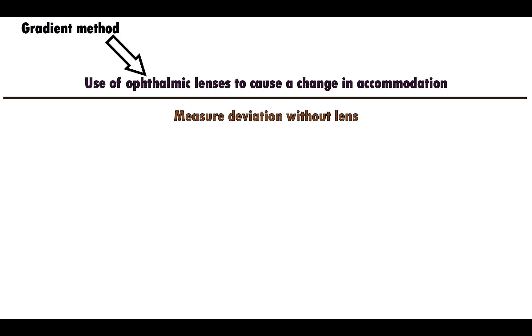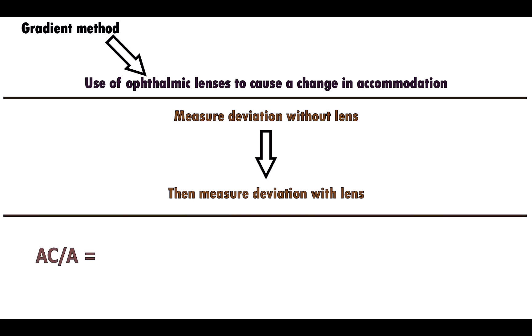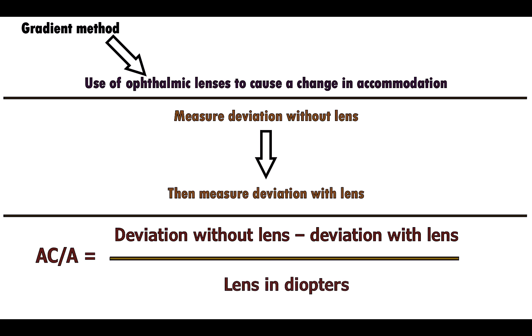First, the ocular deviation is measured without any lens, and then with a lens. The AC/A ratio is then calculated using the formula: deviation without the lens minus the deviation with the lens, divided by the power of the lens used in diopters.